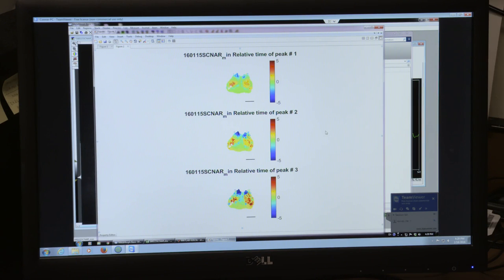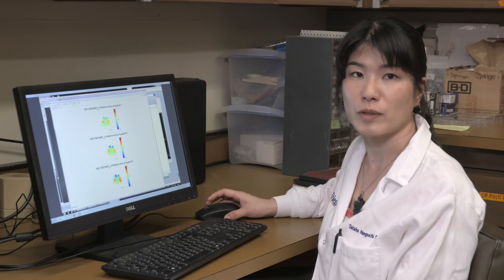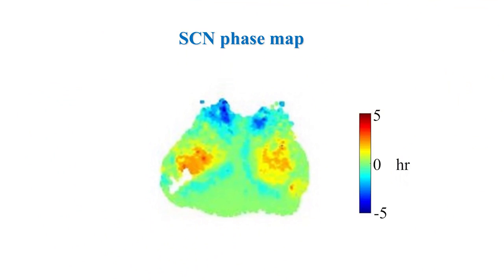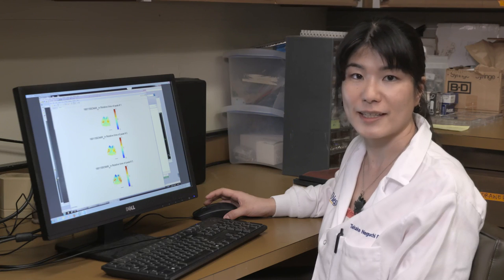This is the phase map of PER2 generated by MATLAB. We use a MATLAB script made by Dr. Raijin at Amherst College. Here we see the phase leading part in blue and lagging part in red. Using MATLAB, we can visualize spatiotemporal patterns of PER2 rhythms.